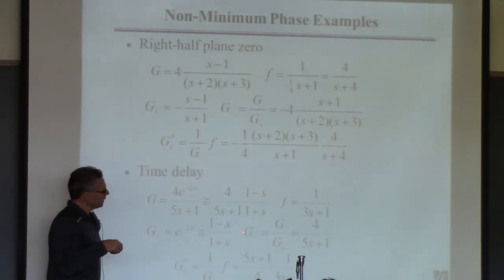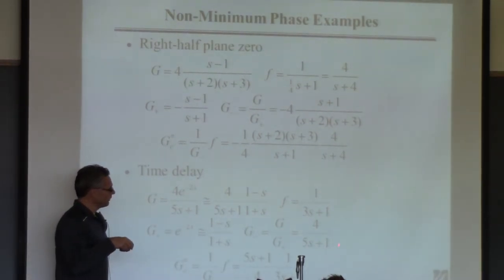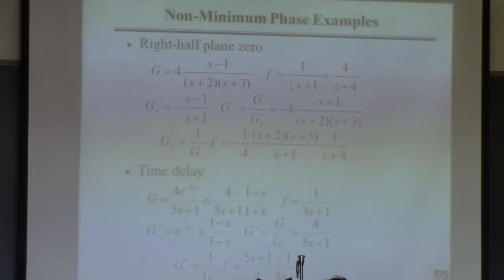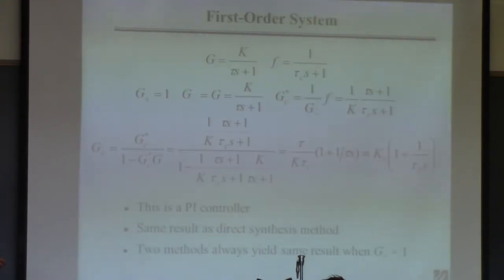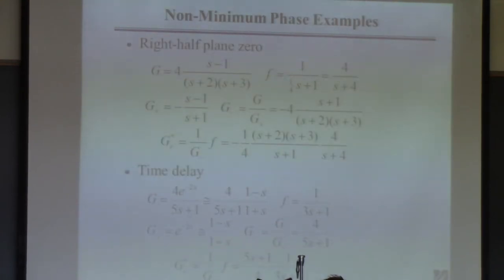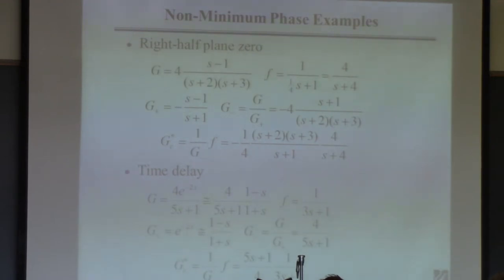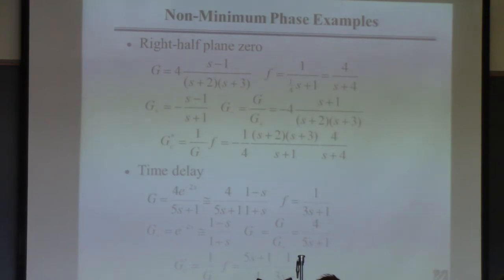The G_minus is just the first-order part without the time delay or Padé approximation part. Form the IMC controller as (1/G_minus) * F, plug it in, and you get this thing. This one's a little simpler, so you could in principle plug it into the standard feedback equation and get the GC if you want. If I ask you on a test to find GC, I'm going to have to give you a simple enough problem — otherwise you spend 15 minutes doing algebra and make a mistake.